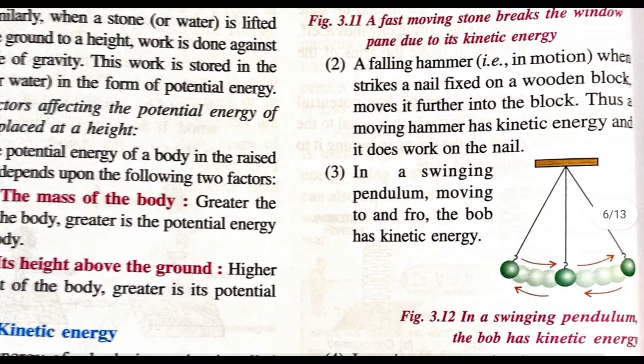Falling hammer: when a hammer strikes a nail fixed on a wooden block, it moves the nail further into the block. If we throw the nail onto the wooden block, the nail will come into motion and the kinetic energy will go into the wood.